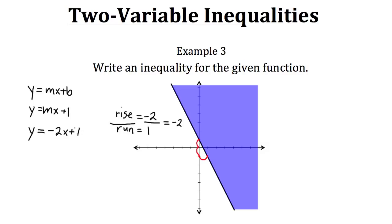Right now we just have the equation for this line, but we actually need to write the inequality for this function. Since we have a solid line on the graph, we know that y can be equal to this particular function. But since we have the shaded region above it as well, we know that it can also be greater than. So we can write this as y is greater than or equal to negative two x plus one. That would be our inequality for example three.